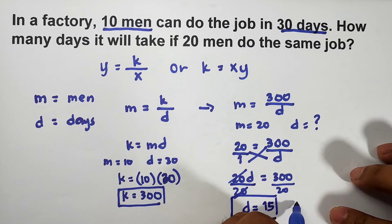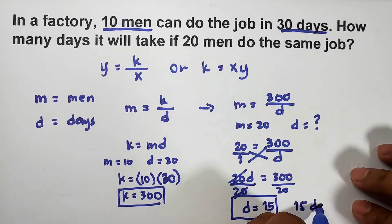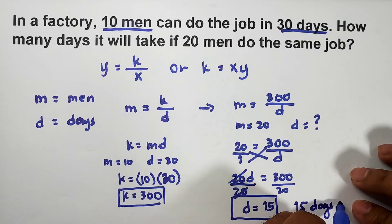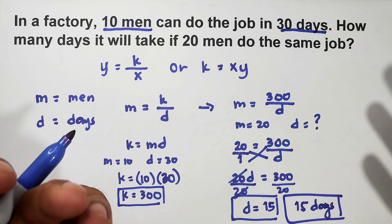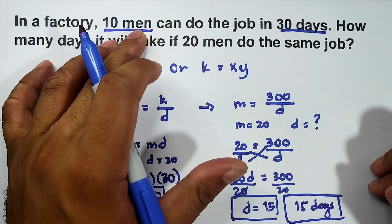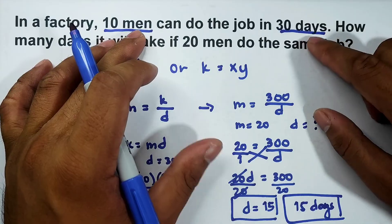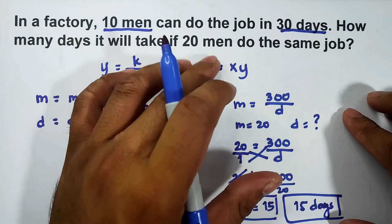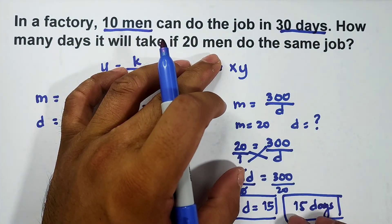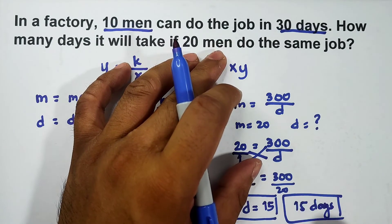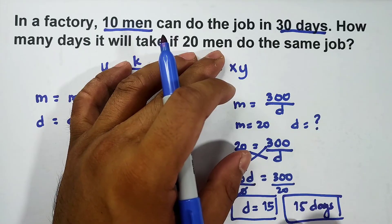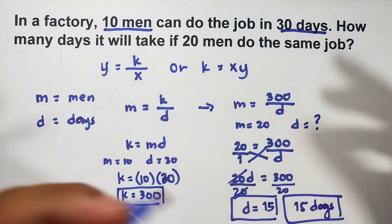So ganon sya kadali. And as you can see, this one is an inverse variation. Nung sampung tao lang, 30 days. Okay, ngayon nung 20 tao nang gagawa, it will only take them 15 days. So since marami yung tao, mas bumilis yung trabaho and mas mabilis yung matapos yung job.